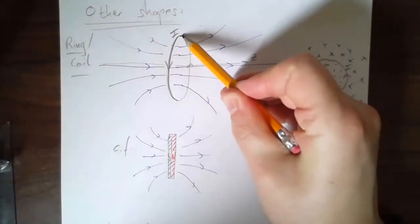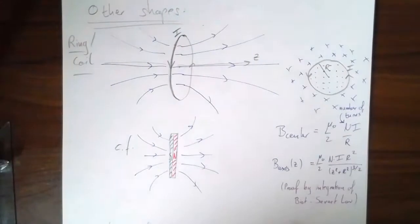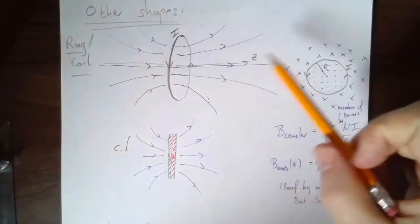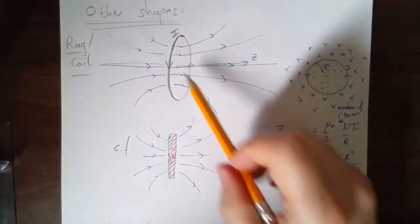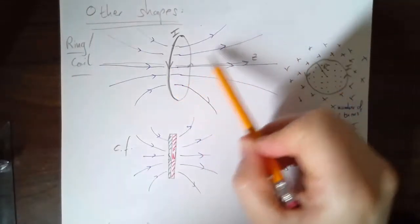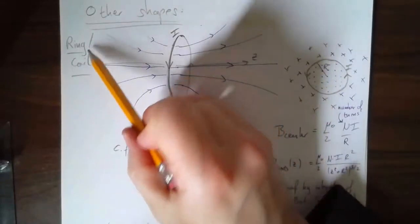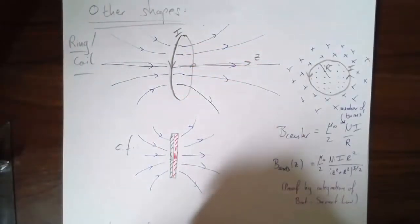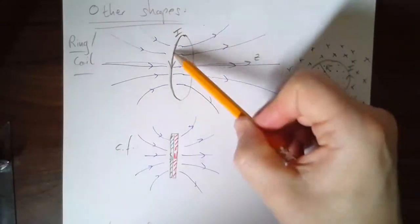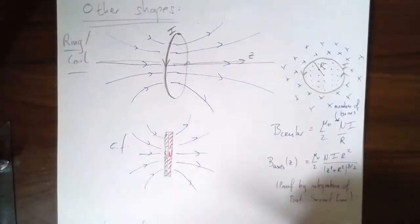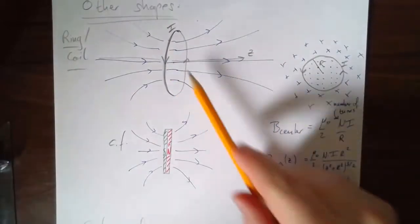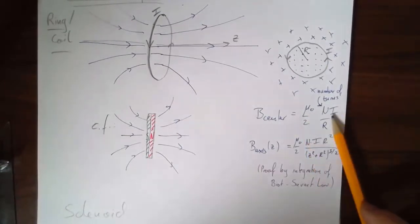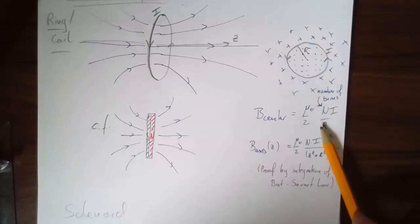The individual contribution from each little chunk of wire will be given by the Biot-Savart law, which I'm going to come to. For now let's just work with the result. Sometimes we talk about a coil — a coil is just the same thing but wrapping around multiple times. Wrapping around twice is like having twice the current. The magnetic field strength at the center is given by B = μ₀NI / 2R, where N is the number of turns and R is the radius.